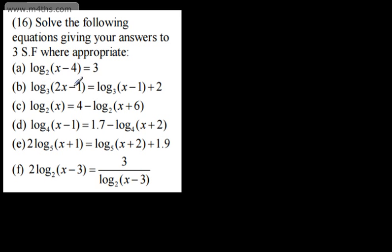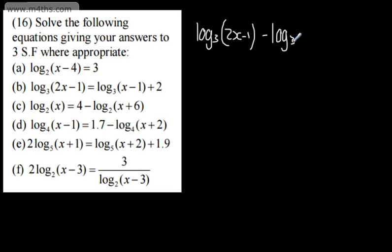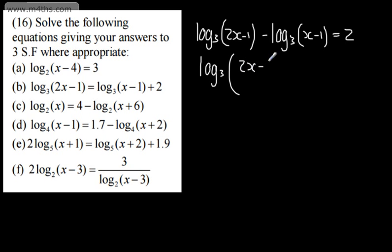On the next one, we've got log to the base 3 of 2x minus 1 is equal to log to the base 3 of x minus 1, plus 2. What I'm going to do here is use log laws. I'll get all the terms with logs on the left-hand side: log to the base 3 of 2x minus 1, minus log to the base 3 of x minus 1, equals 2. Since we have a difference of logs, we can write this as a quotient: log to the base 3 of (2x minus 1) over (x minus 1) equals 2.